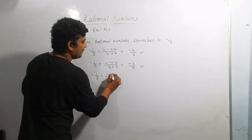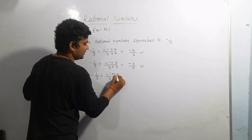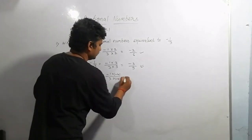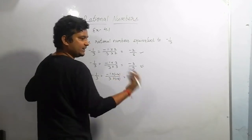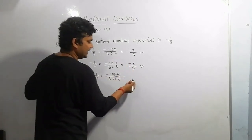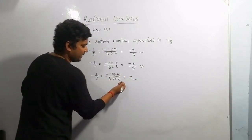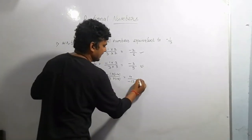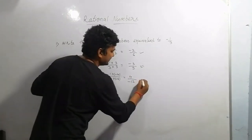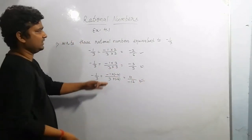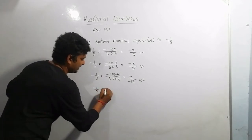For the third equivalent number, we multiply minus 1 by 3 with a negative number, say minus 4. Minus 1 multiplied by minus 4 gives positive 4, and 3 multiplied by minus 4 gives minus 12. So we get 4 by minus 12, which can also be written as minus 4 by 12. So the three equivalent rational numbers for minus 1 by 3 are minus 2 by 6, minus 3 by 9, and 4 by minus 12.